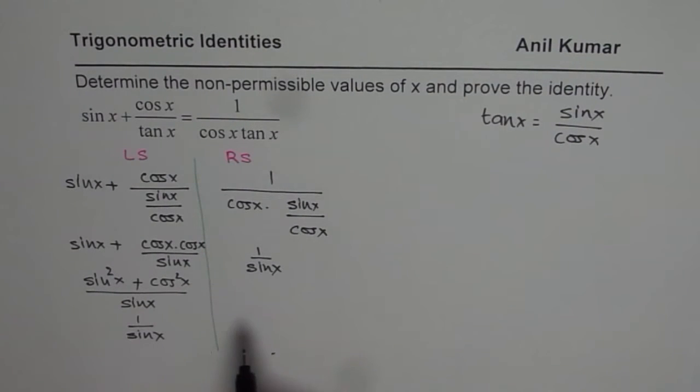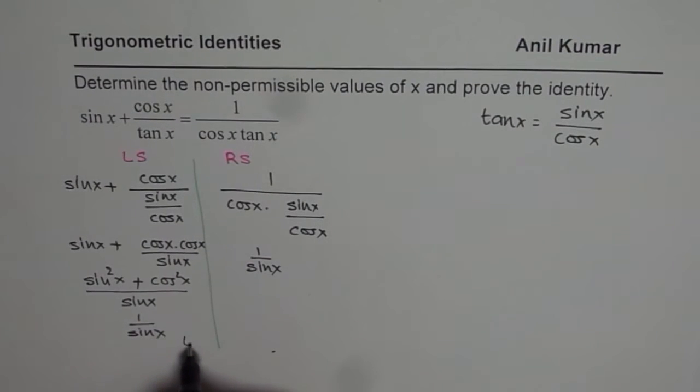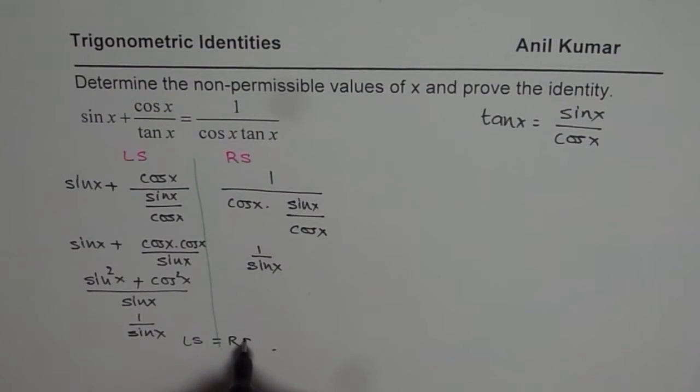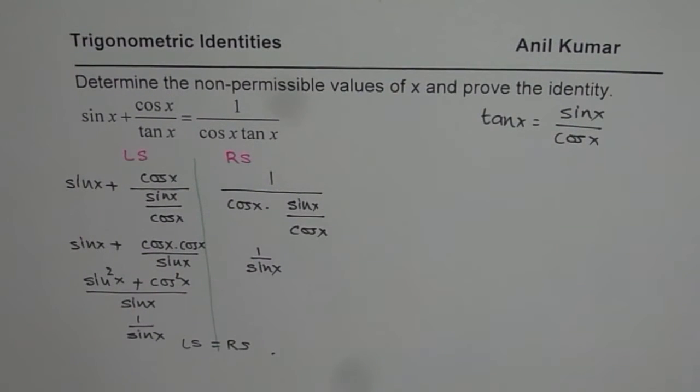Now, cos x and cos x cancels out, so we get 1 over sin x on the right side also. So therefore, now we can say that left side equals right side, and we have proven the identity.